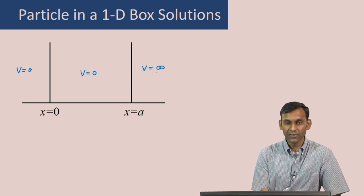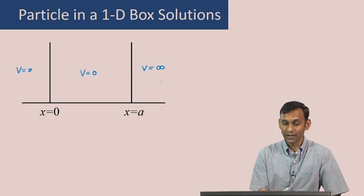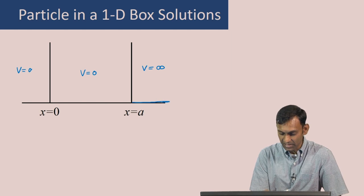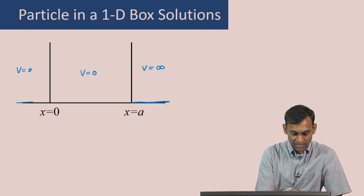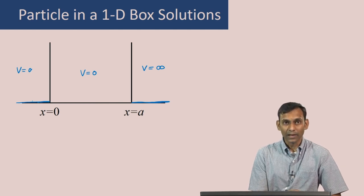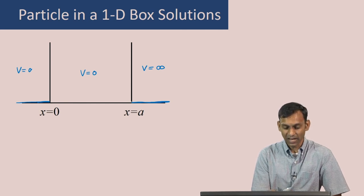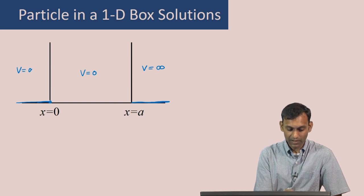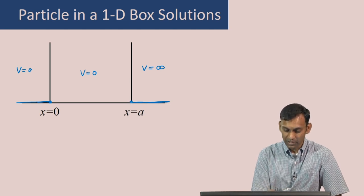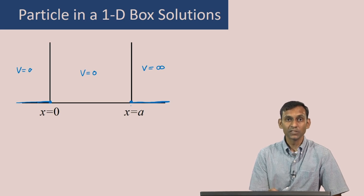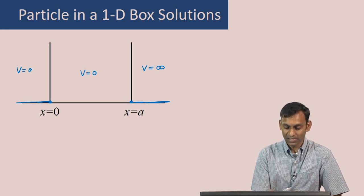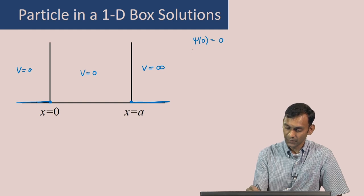Here is the diagram of the potential energy: V equals 0 in the interior region, and V equals infinity in the two outer regions. Now, if the potential energy is infinity, the particle cannot be there and the wave function in those regions is 0. Because of continuity, the wave function inside the box must also be 0 at the boundary points. This ensures the wave function is continuous at these boundaries. So we write the two boundary conditions as ψ(0) = 0 and ψ(a) = 0.